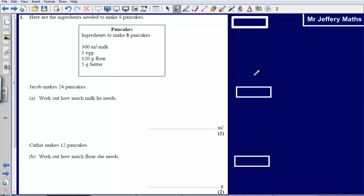So what I'm going to do is draw myself a little bar, and I'm going to say that this represents my 8 pancakes. Now, this represents my 8 pancakes, and we're talking about how much milk we need. To make 8 pancakes, I'm going to need 300 milliliters of milk.